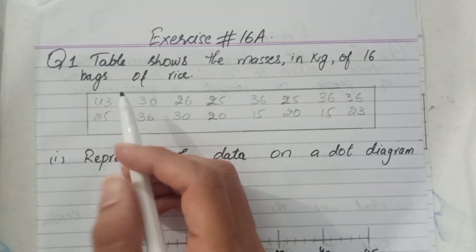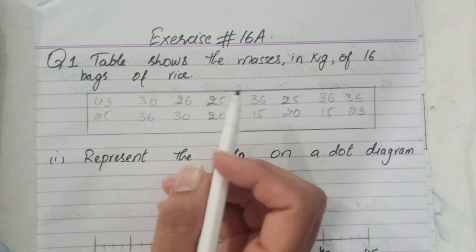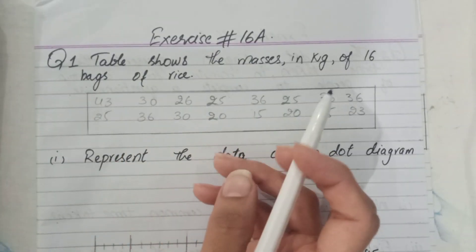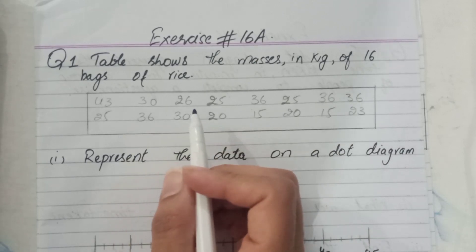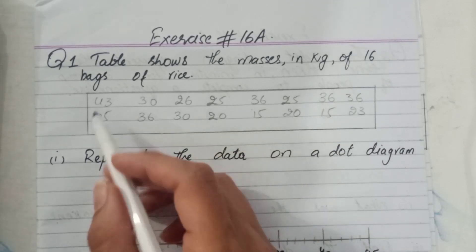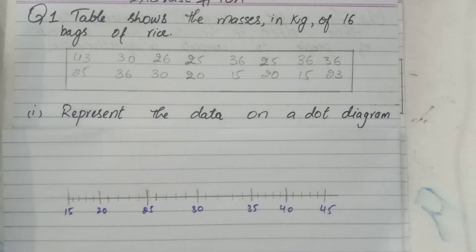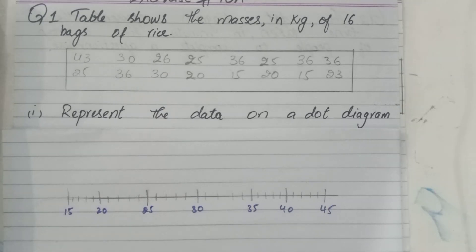Question number one: the table shows the masses in kilograms of 16 bags of rice. Part number one — represent the data on a dot diagram. We have to represent this data on a dot diagram.